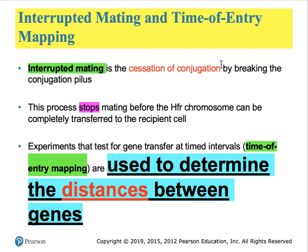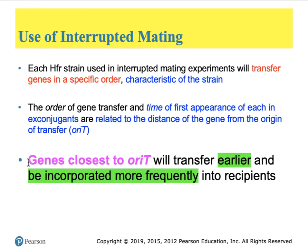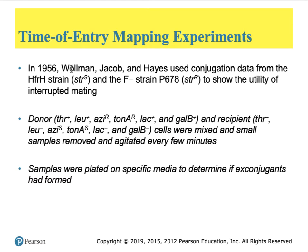For a particular strain of HFR, the plasmid is always incorporated into the same location and in the same direction in the chromosome. So if these strains are used for different experiments, one can interrupt the conjugation event after a certain period of time and see which genes have transferred. By doing this at timed intervals and comparing the results, one can determine the order in which genes are present on the bacterial chromosome and how far apart they are based on the number of minutes elapsed since conjugation started. In 1956, Wollman, Jacob and Hayes used these time-of-entry mapping experiments to determine the location and order of genes on bacterial chromosomes.